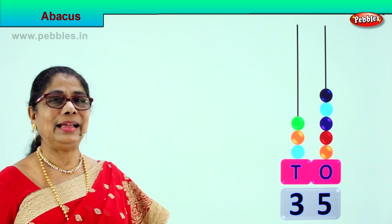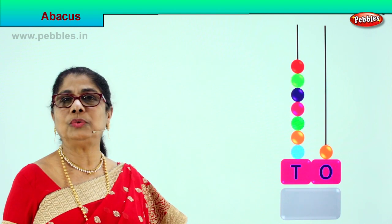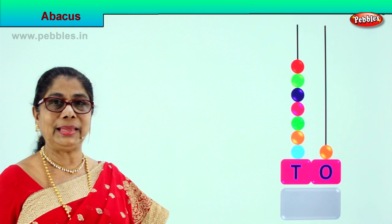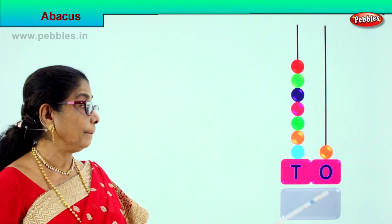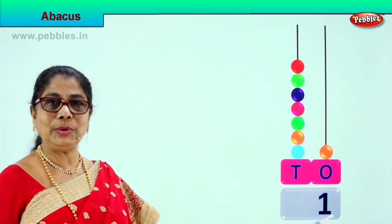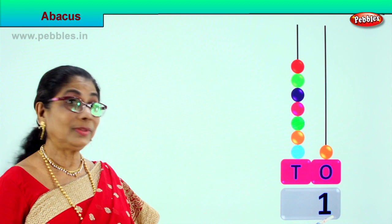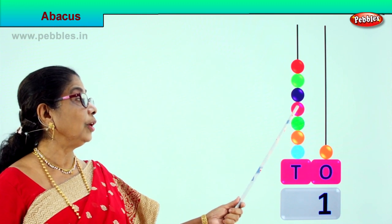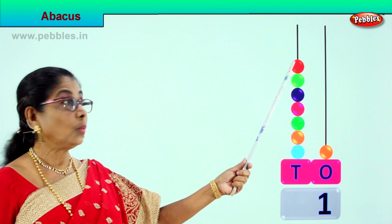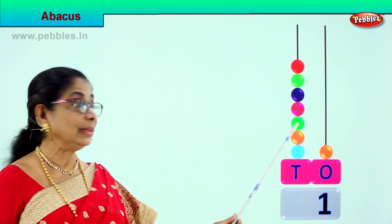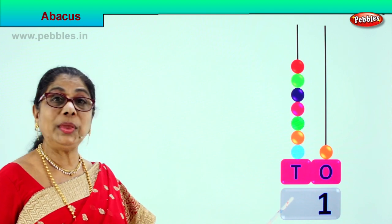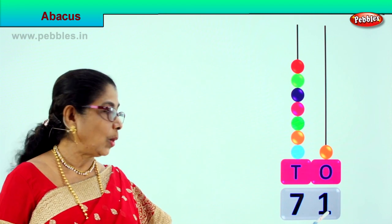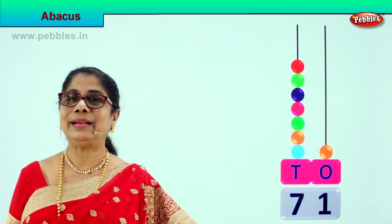Let's take another abacus to help us count and learn. In the ones place we have just one single bead — we write 1, that is 1 one. How many ones? Just 1. In the tens place, let's count in tens: 10, 20, 30, 40, 50, 60, 70 — 1 ten, 2 tens, 3 tens, 4 tens, 5 tens, 6 tens, 7 tens. We write 7 here. 7 tens and 1 one is 71.